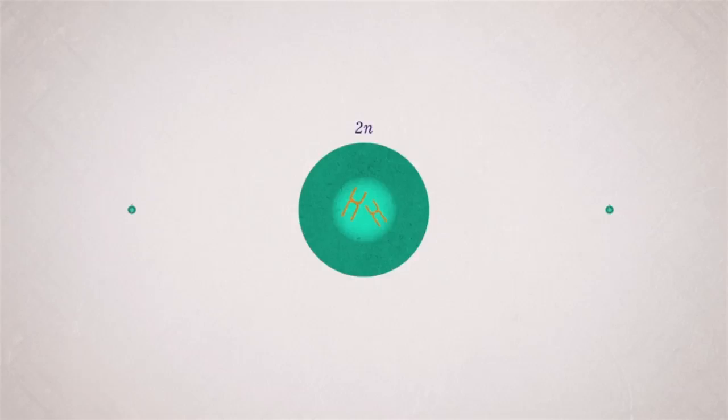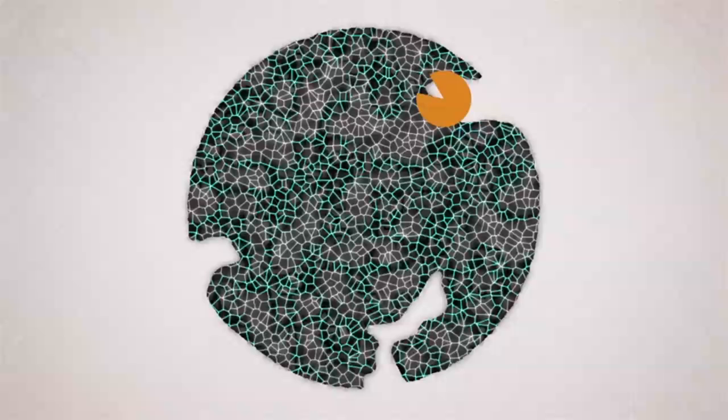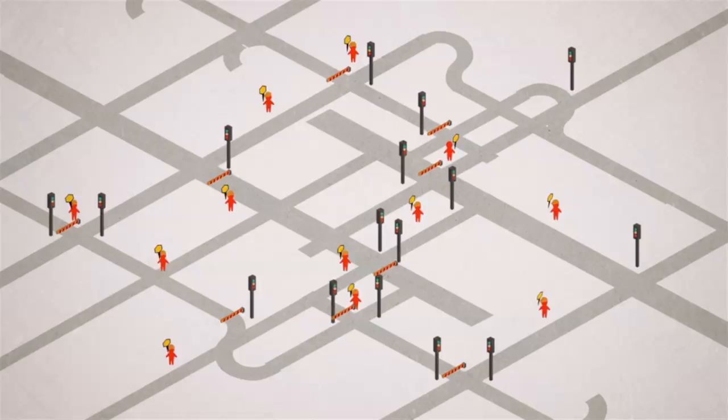But cells also need to die, sometimes through a kind of programmed cell suicide known as apoptosis. This process is necessary for the regulation of the cell count and the elimination of sick cells. The division, growth and death of cells are tightly regulated by a molecular system of signals, barriers and repair systems.